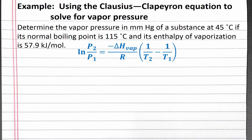We can start with the Clausius-Clapeyron equation. We'll assign temperature 1 and pressure 1 to the normal boiling point. For temperature, we need to use Kelvin so we can convert 115 degrees Celsius to Kelvin. Since this is the normal boiling point, we know the vapor pressure is 1 atmosphere, which is 760 millimeters of mercury.